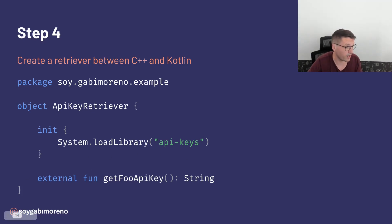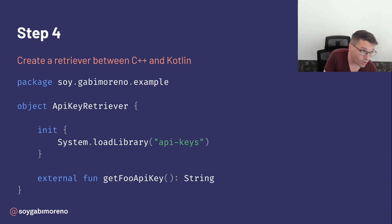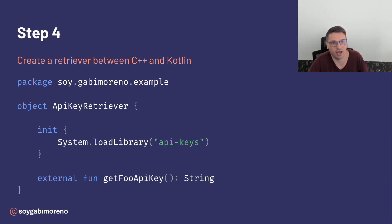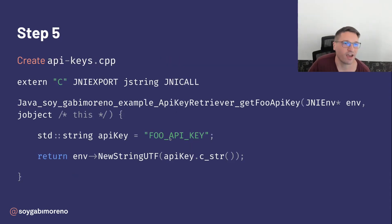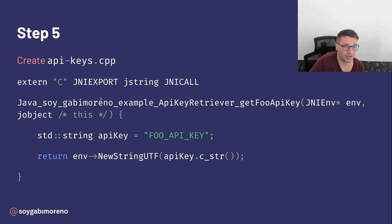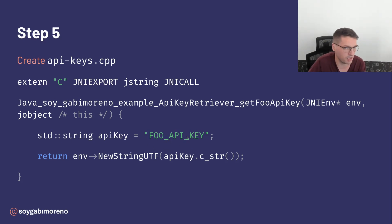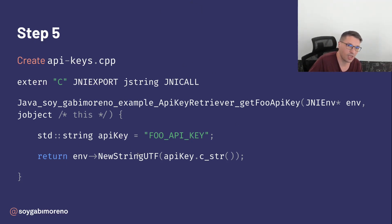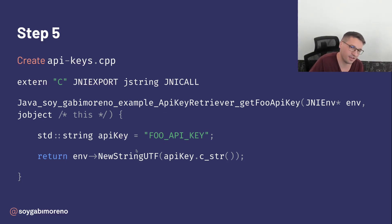The third step is to create a directory called 'cpp' inside our module at the path: module-name/src/main. The fourth step is to create a retriever object or class — it doesn't matter — that will be the bridge between C++ and Kotlin, or Java if that is the case. Step five is to create the native file, and here we hard-code the API key. This won't be a problem because this file is not in git and won't appear easily in the APK.